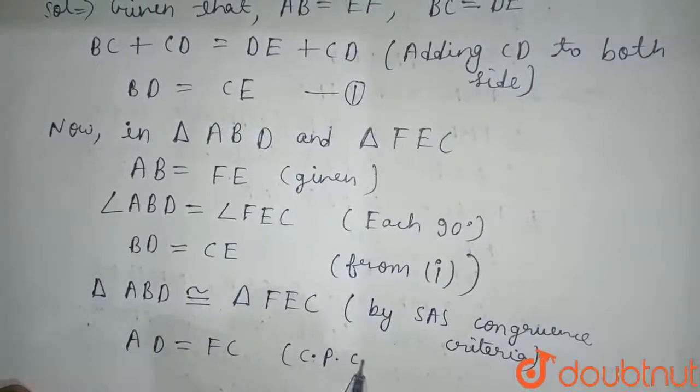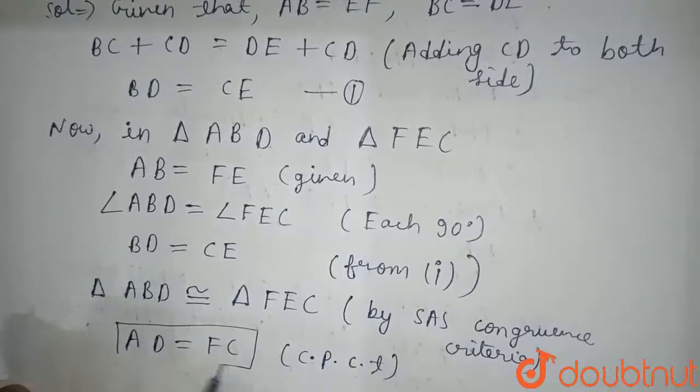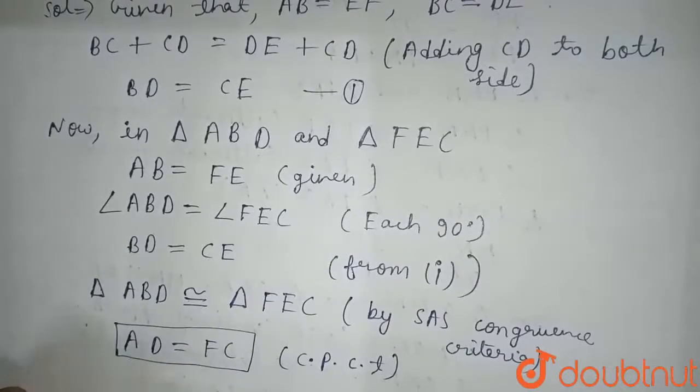If the triangles are congruent, we can say that AD equals FC by CPCT.